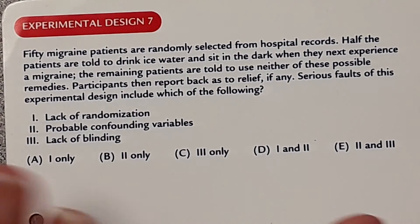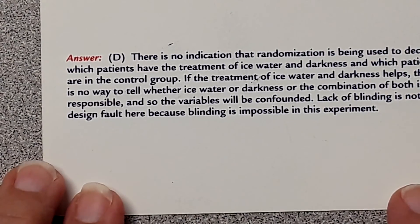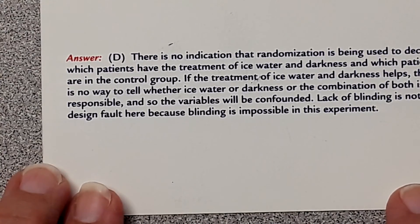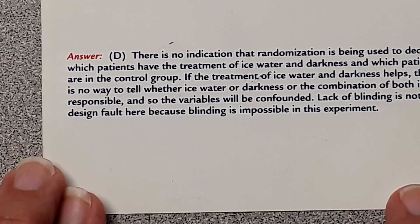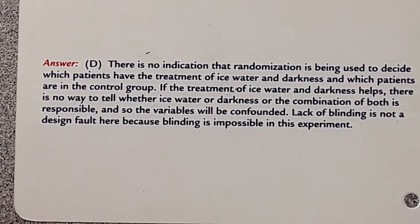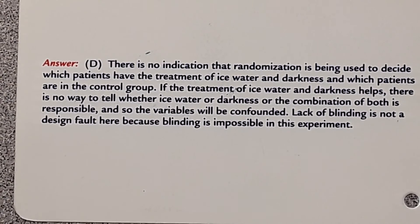The answer is D. There is no indication that randomization is used to decide which patients receive the treatment of ice water and darkness versus the control group. Furthermore, if the treatment helps, there is no way to tell whether ice water, darkness, or the combination is responsible — the variables will be confounded. Lack of blinding is not a design fault here because blinding is impossible in this experiment. They should have had separate groups: one for ice water only, one for darkness only, a control group, and possibly a combined group.